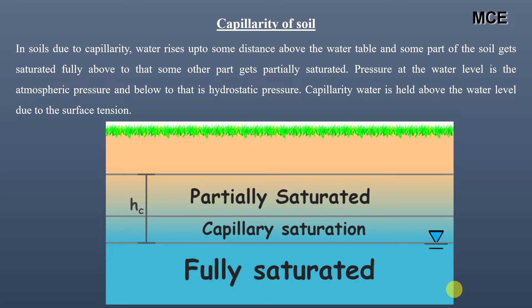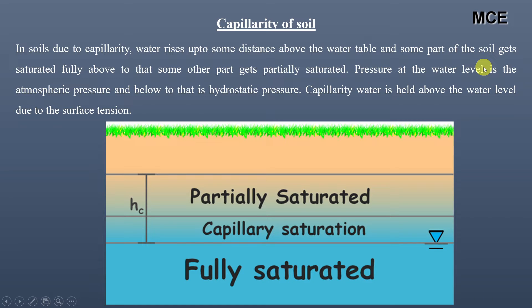Capillarity of a soil is a phenomenon in which water rises up to some distance above the water table, and some part of the soil gets fully saturated while above that some part gets partially saturated. Pressure at the water table is atmospheric pressure, and below that is hydrostatic pressure. Capillary water is held above the water table due to surface tension.